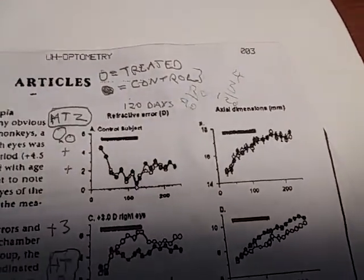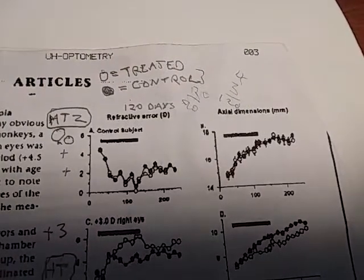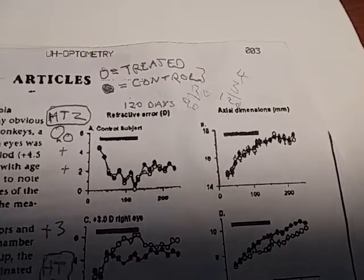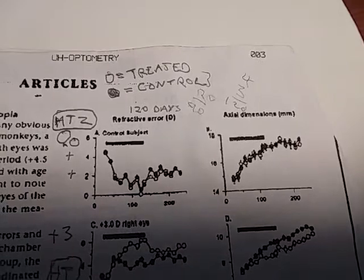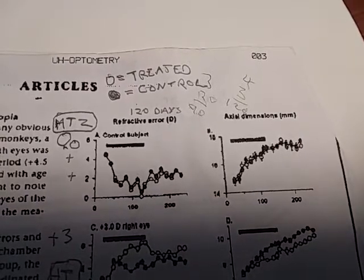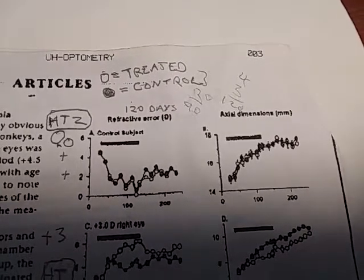In this case, no lens or a blank lens was put on the control and a minus 3 and a plus 3 were put on the test.